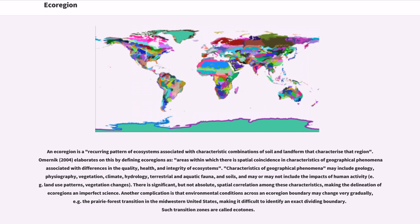An ecoregion is a recurring pattern of ecosystems associated with characteristic combinations of soil and landform that characterize that region. Omernik elaborates on this by defining ecoregions as areas within which there is spatial coincidence in characteristics of geographical phenomena associated with differences in the quality, health, and integrity of ecosystems.